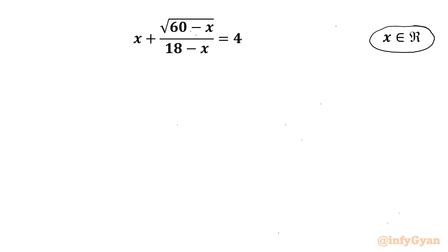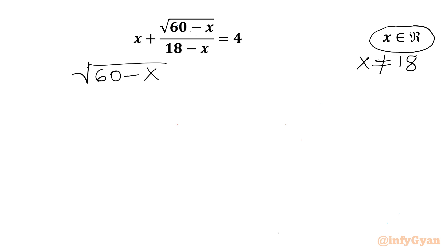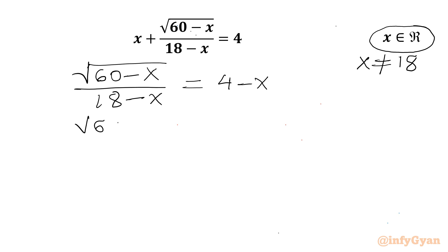Let's get started by noting that the denominator cannot be 0, so x cannot be 18. Now I will take away x from both sides, so square root of (60 minus x) over (18 minus x) will be equal to 4 minus x.